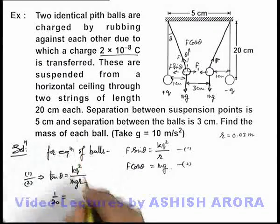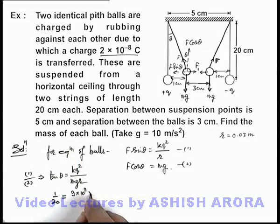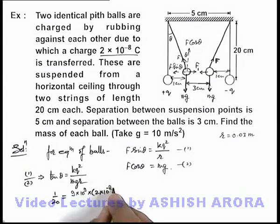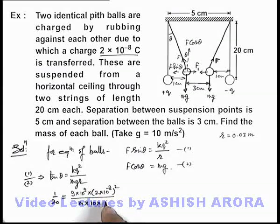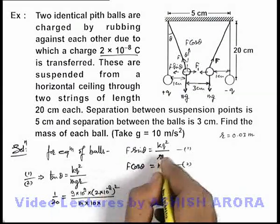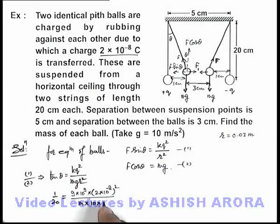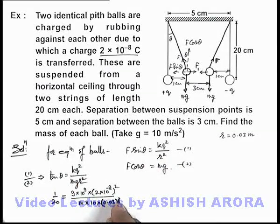This equals, if we substitute the values: k is 9×10⁹, multiplied by (2×10⁻⁸)² divided by m, g we can consider as 10 meters per second squared, and the separation r² is (0.03)².